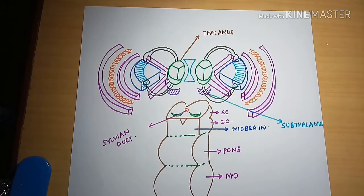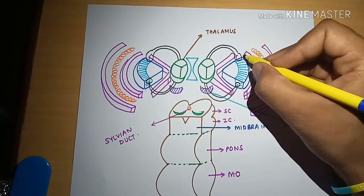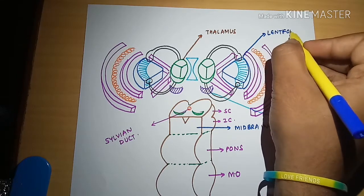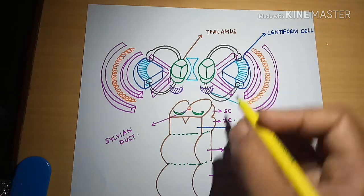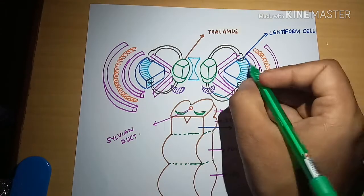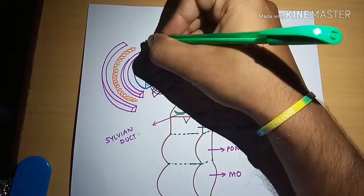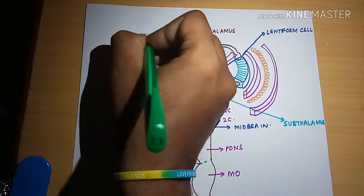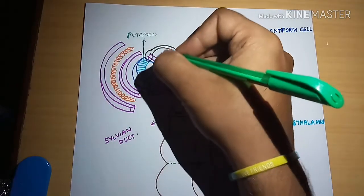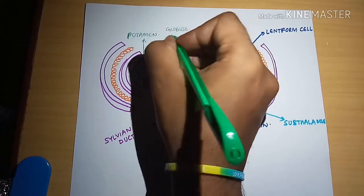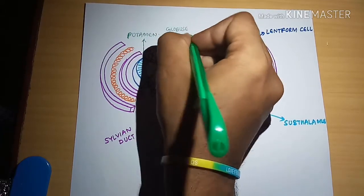This whole structure is the lentiform nucleus. The lentiform nucleus has two parts: the more lateral part is called the putamen, and the medial part is called the globus pallidus. This part is the putamen and this part is the globus pallidus.